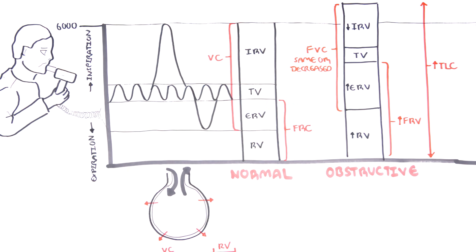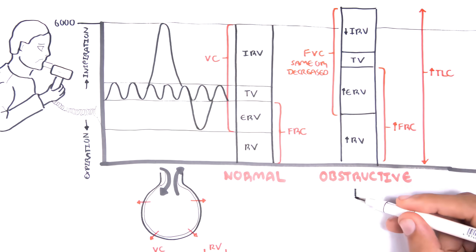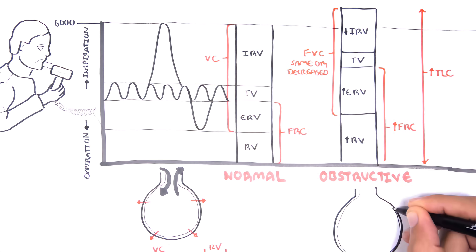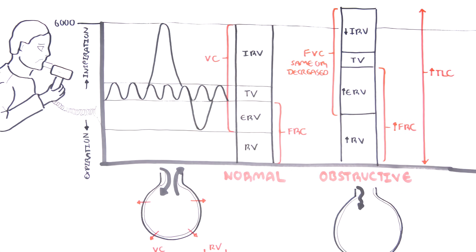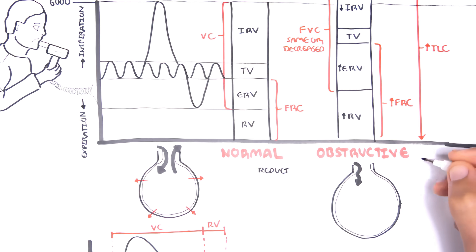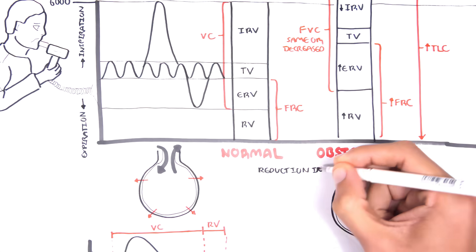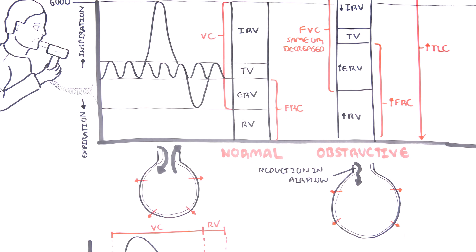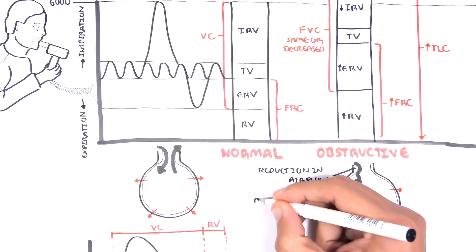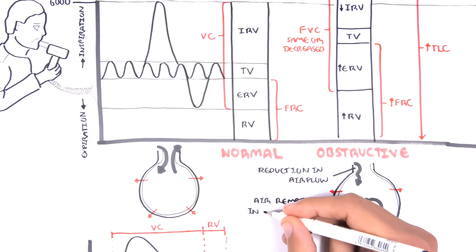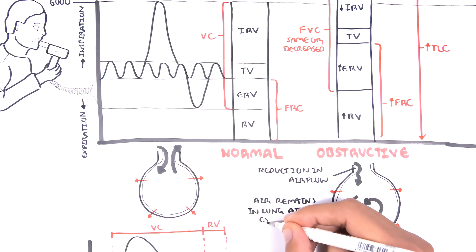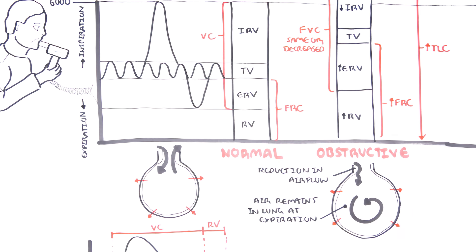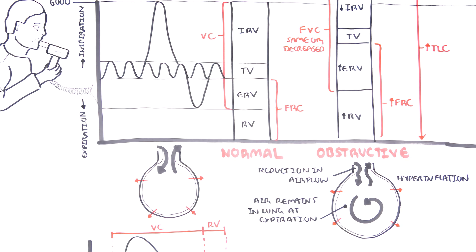The reason behind these changes in lung volume and capacities are two main things: firstly, the reduction in airflow to the lungs due to obstruction, and then what's called air trapping, where air remains in the lungs at expiration. As a consequence, you get hyperinflation and consequently an increase in your functional residual capacity.